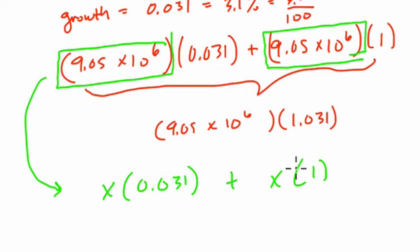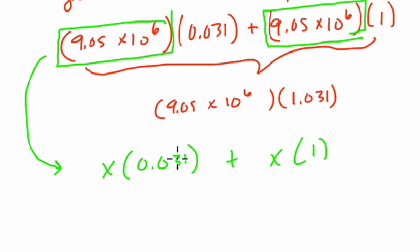So x times 0.031 plus x times 1. So algebraically, if we have one group of x and then 0.031 groups of x, if we put them together, what would we get? We would get x groups of 1.031 or 1.031x.